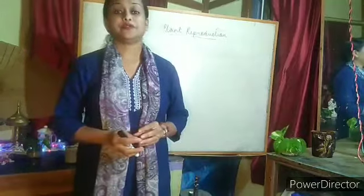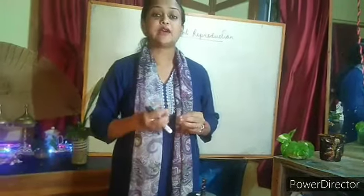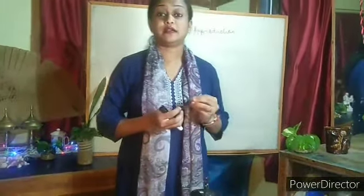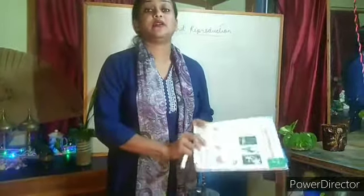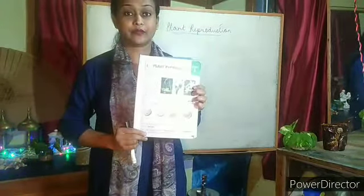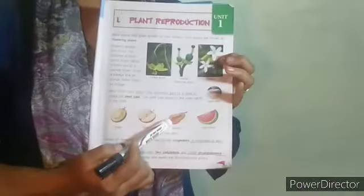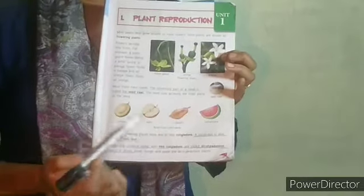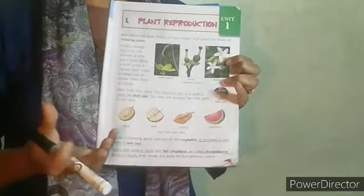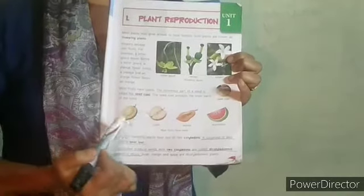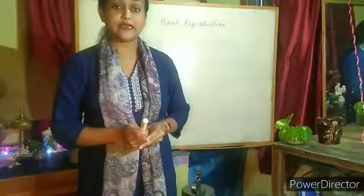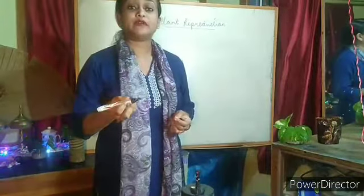Most fruits have seeds inside them. We can see many fruits having many seeds — as in the case of watermelon and papaya, these fruits consist of many seeds. Again, there are some fruits which consist of few seeds, like apple. And mango consists of only one seed. Now when discussing seeds, let's take the example of a gram seed.